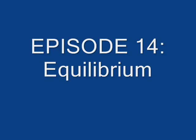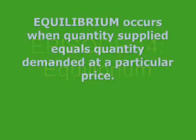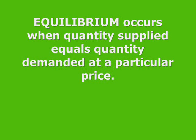Equilibrium occurs where quantity supplied equals quantity demanded. What does it mean? Basically, your market price will be stable — it won't tend to change — when you reach the point at which willingness to buy coincides with willingness to sell in the market.